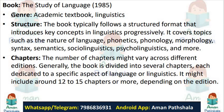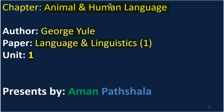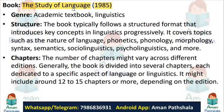There is a book and the name of the book is The Study of Language. It was published in 1985. In this book, there are several chapters and one of the chapters is Animal and Human Language. We read this in the syllabus.